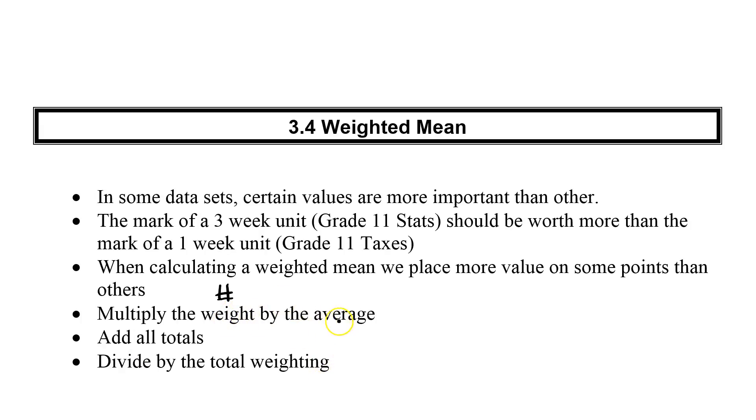And then we have to divide by my total weights. So weights times average. Add them up to get a total. And then divide by my total weighting. Let's take a look at an example here.